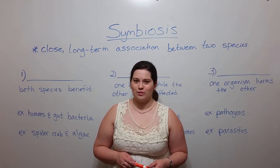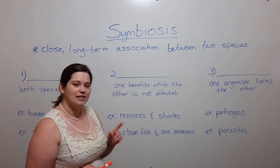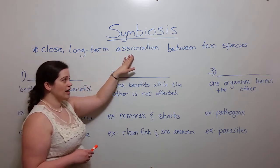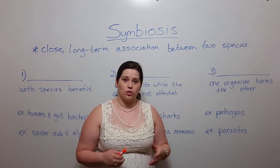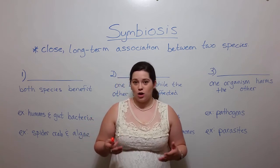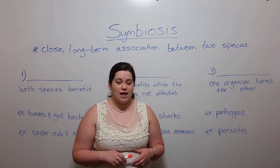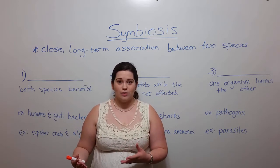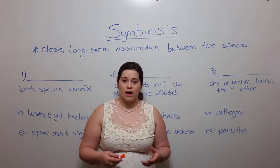Hi everyone and welcome to Biology Professor. Today we're talking about symbiosis. Symbiosis is a close long-term association between two different species, and it actually turns out that symbiosis plays a critical role in the survival of many different species. Also, through what is now known as the endosymbiotic theory, symbiosis plays a huge role in how eukaryotic cells developed through the course of evolution from symbiosis of prokaryotic cells.